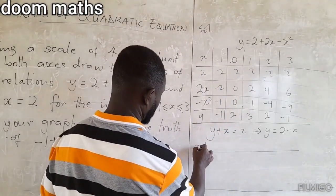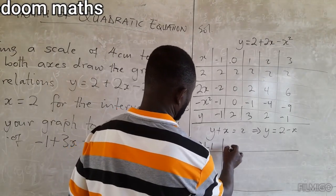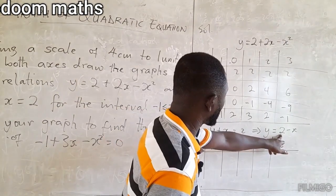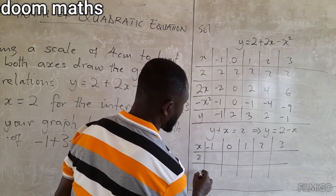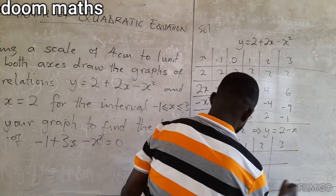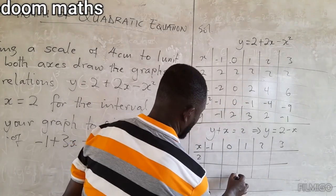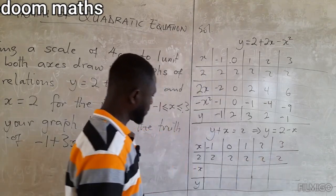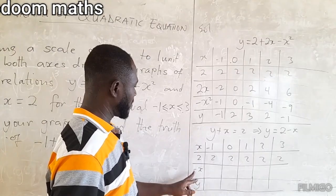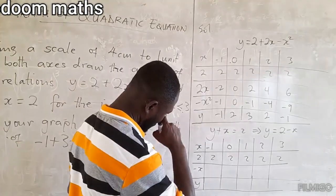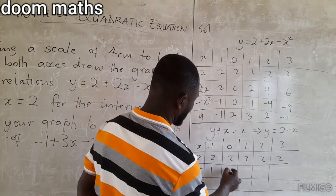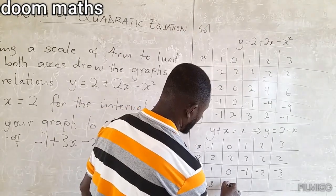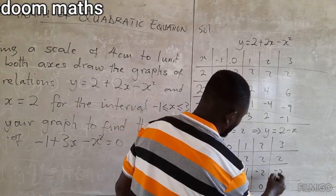The x values are negative 1, 0, 1, 2, and 3. The constant 2 runs through. We take x and negate it: negative 1 becomes 1, then 0, negative 1, negative 2, negative 3. Adding the constant 2 gives y values: 3, 2, 1, 0, and negative 1.